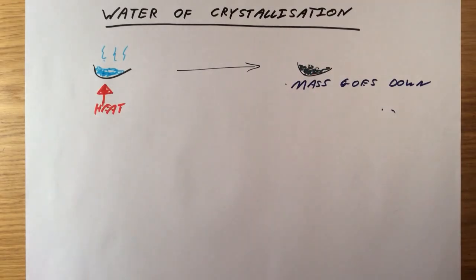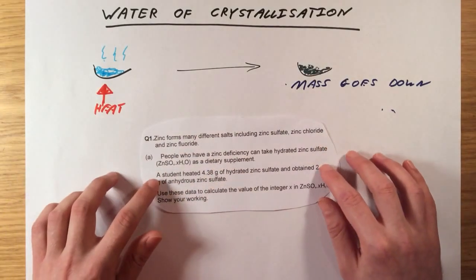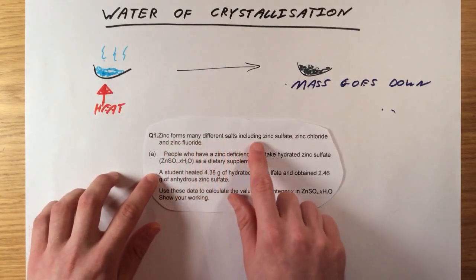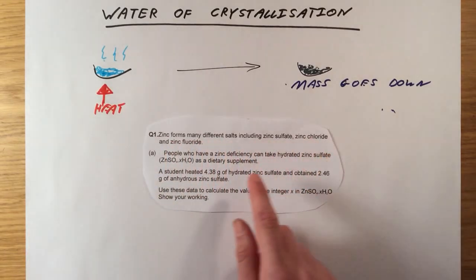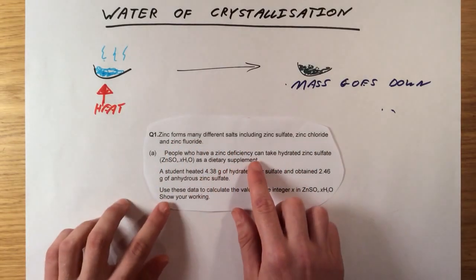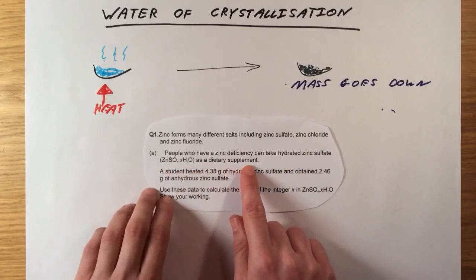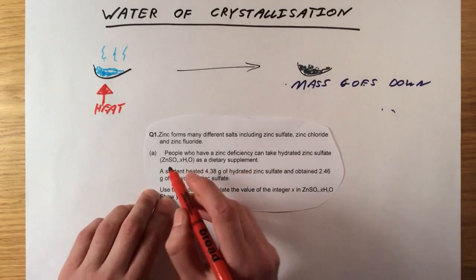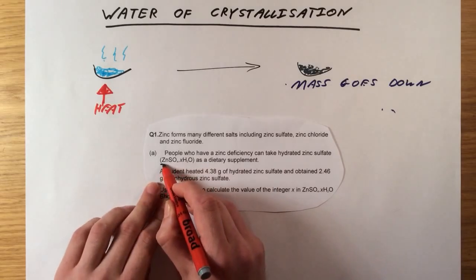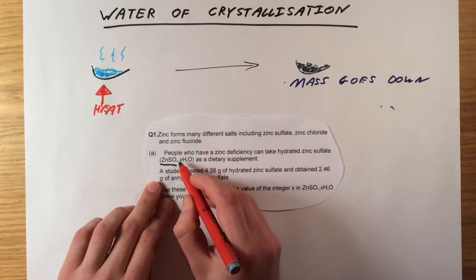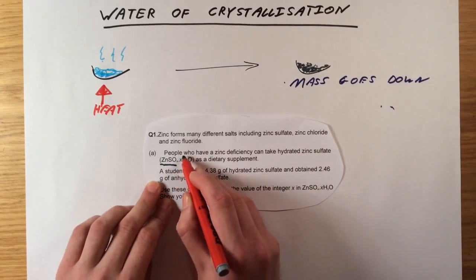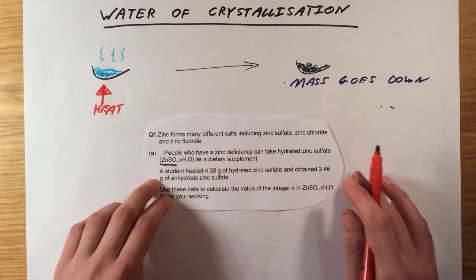So let's just go through one example. Hopefully this will clear up your request, Fraser. This question says, zinc forms many different salts including zinc sulfate, zinc chloride, and zinc fluoride. People who have a zinc deficiency can take hydrated zinc sulfate, ZnSO4 XH2O as a dietary supplement. What this means is, for every mole of ZnSO4 we have in this crystal, we have an unknown number of moles of water, which is what we're going to work out.